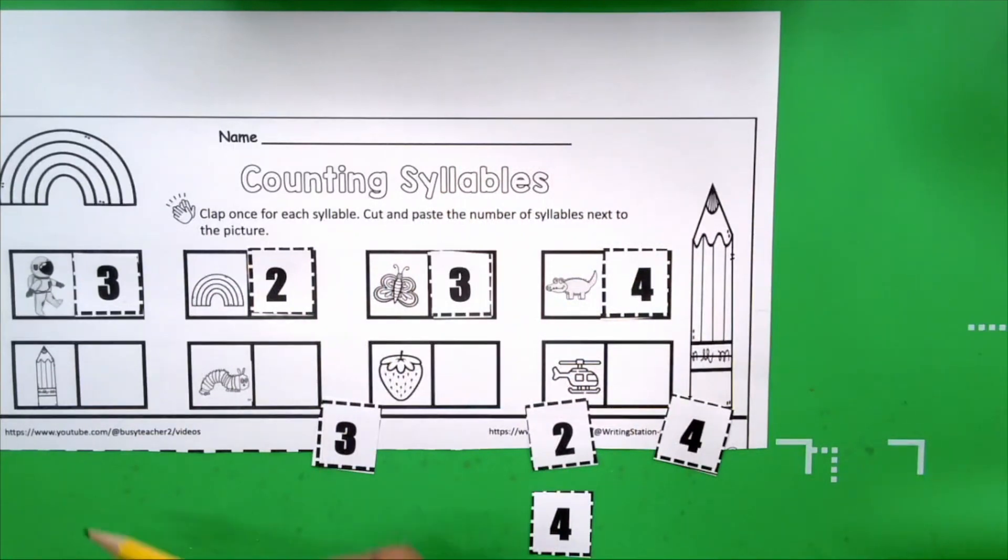The next word is pencil. Get your hands ready. Pencil. How many claps? Two. How many syllables are in the word pencil? Two.